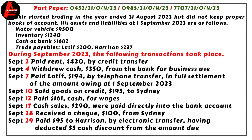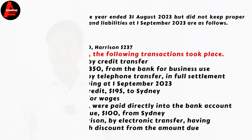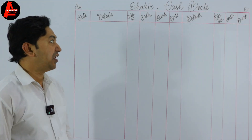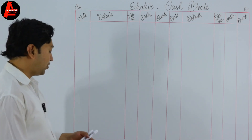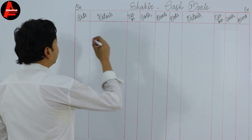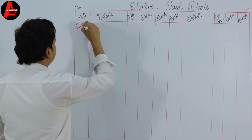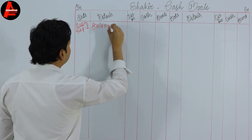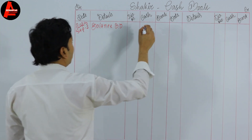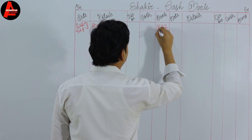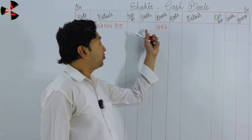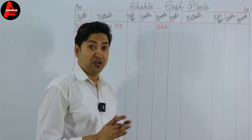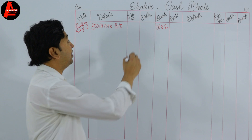During September 2023 the following transactions took place. First, September 2: paid rent 420 dollars by credit transfer. Rent paid is an expense, which will be recorded on the credit side. But before that, we need to write the opening balance on the debit side. The bank balance has a debit balance, so we write: date 2023, September 1, balance b/d, and on the bank column we write 1682 dollars. We do not have a cash balance on the question, so we will not write an opening balance for cash.